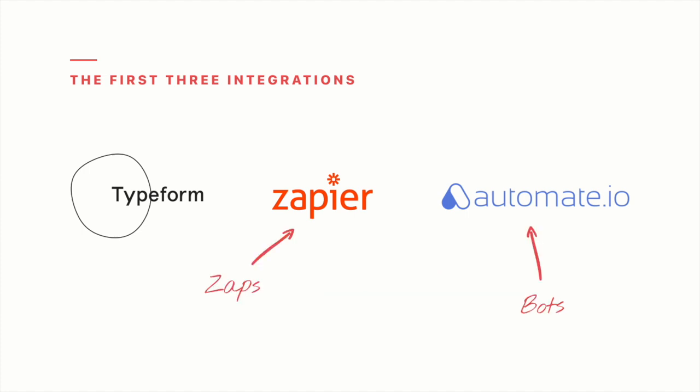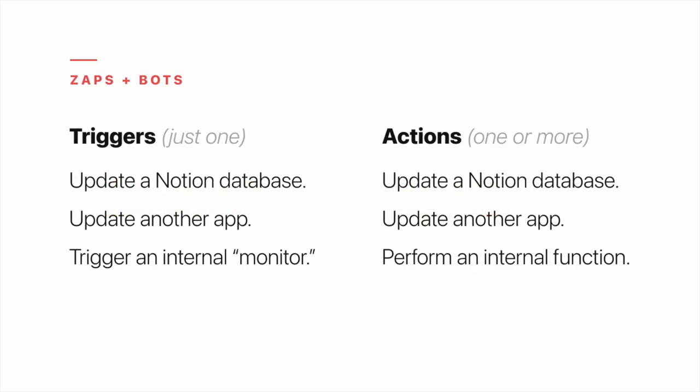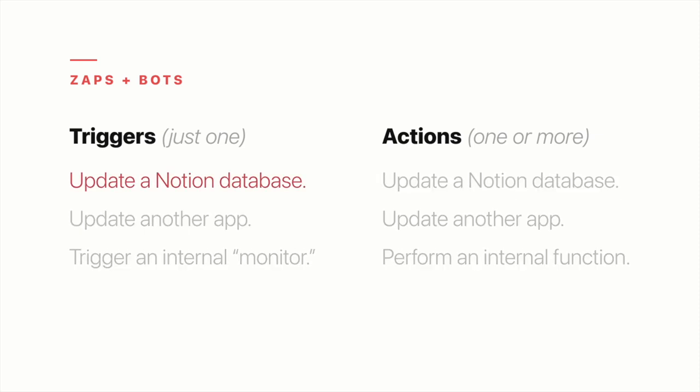Each zap and bot has a trigger followed by one or more actions. Basically, you're creating a formula that says: if trigger, do actions. Zaps and bots can be triggered by Notion, by other apps, or by internal monitors you can configure in Zapier and Automate.io. In Notion, you can trigger a zap or a bot by adding an item to a database. And in Automate.io, you can also trigger a bot by updating an item in a database, which is a considerable advantage of Automate.io over Zapier.